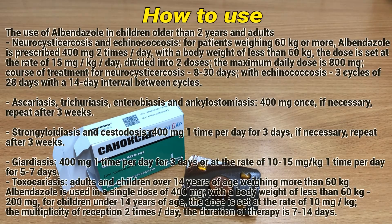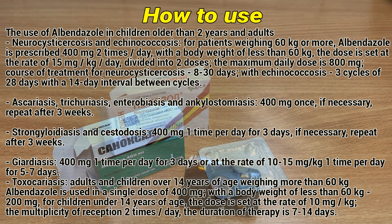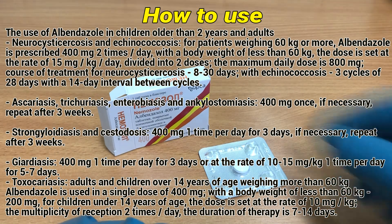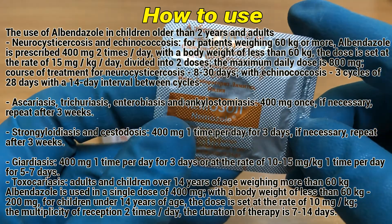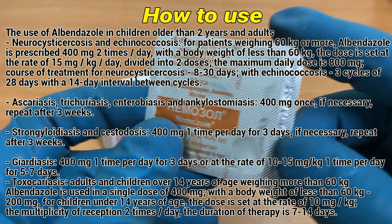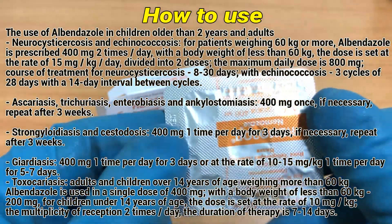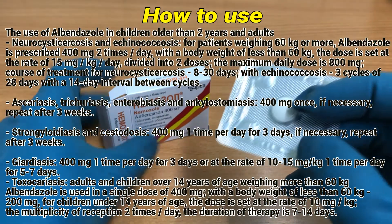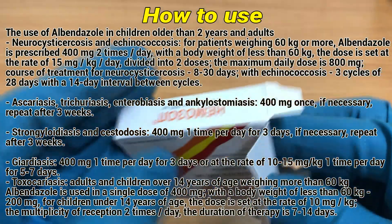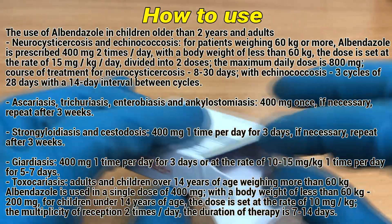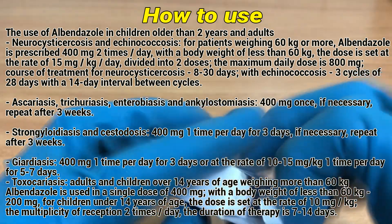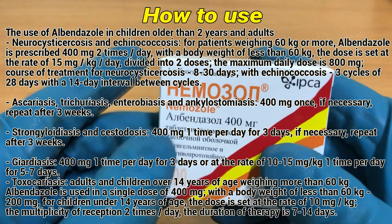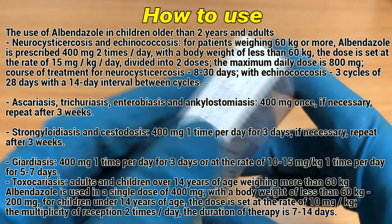For children older than 2 years and adults: Neurocysticercosis and echinococcosis — for patients weighing 60 kg or more, Albendazole is prescribed at 400 mg 2 times per day. With a body weight of less than 60 kg, the dosage is at a rate of 15 mg per kg per day, divided into 2 doses. The maximum daily dose is 800 mg. Course of treatment for neurocysticercosis: 8 to 30 days. For echinococcosis: 3 cycles of 28 days, with a 14-day interval between cycles.